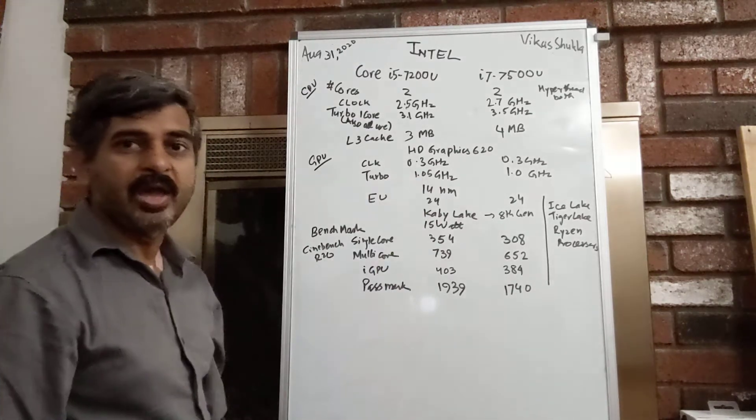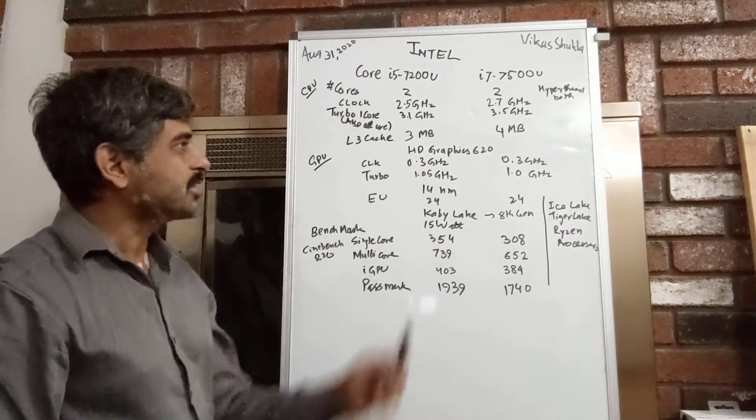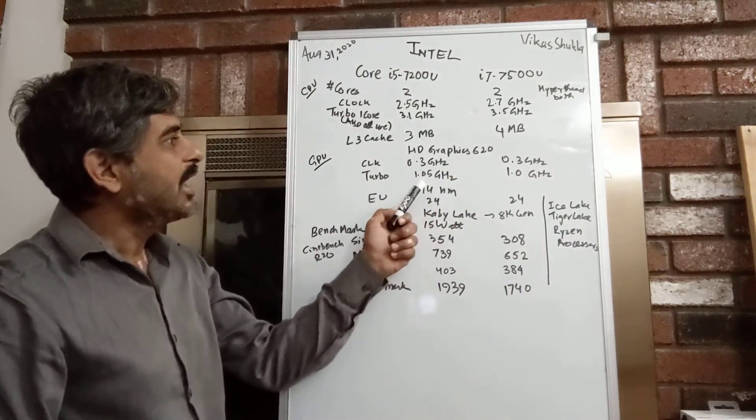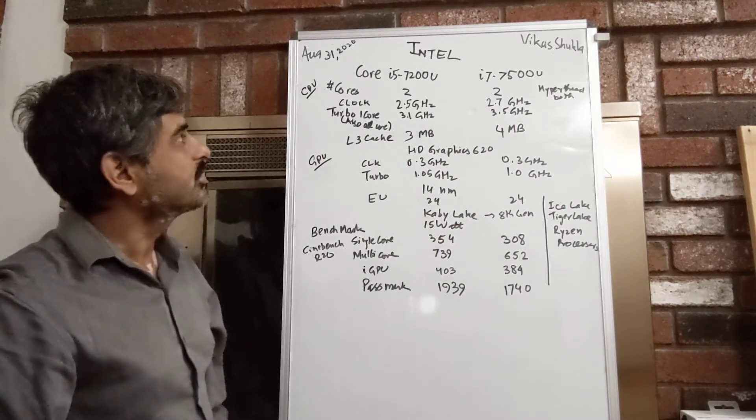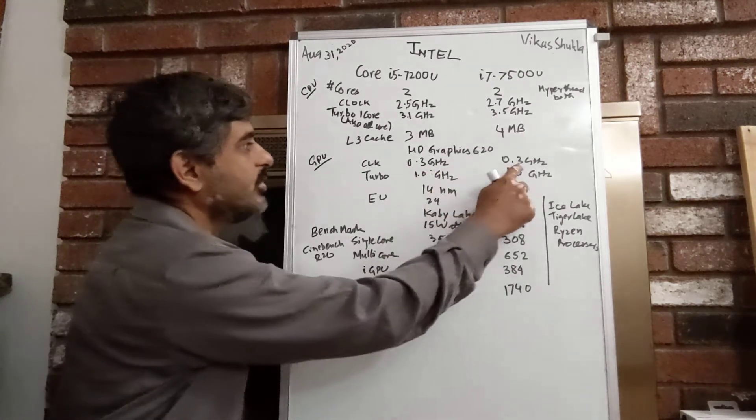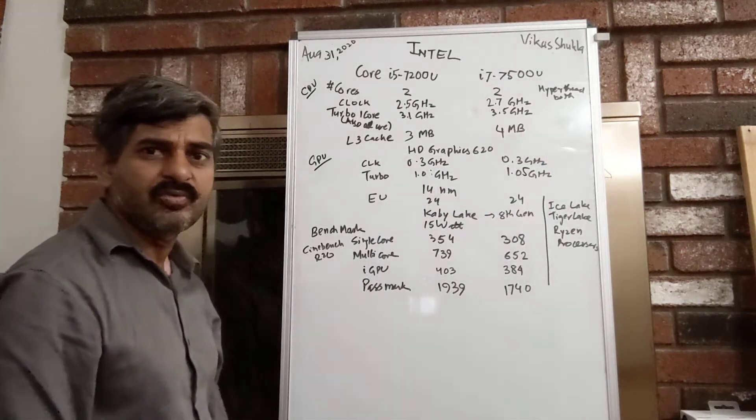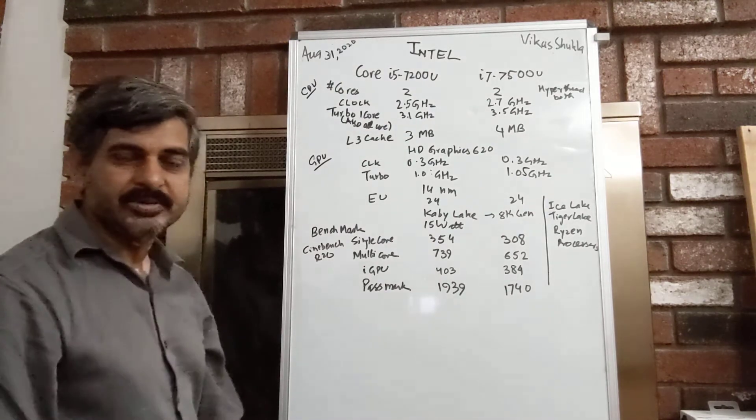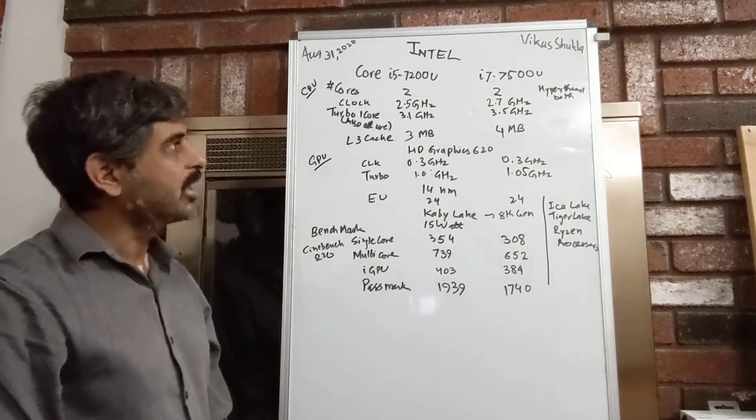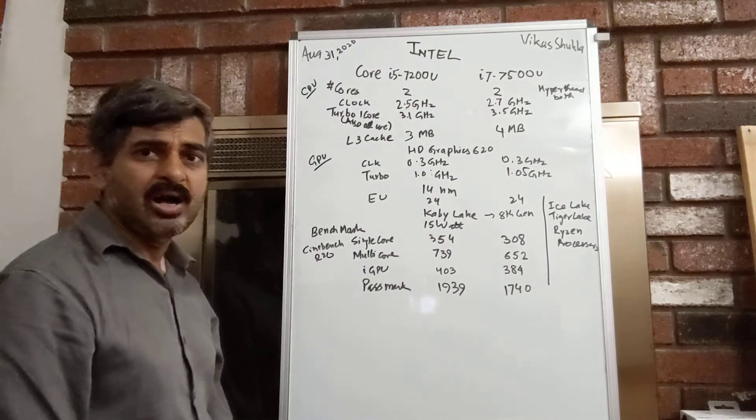Both of them have the same integrated graphics, HD Graphics 620, and we see a nominal increase in the turbo clock frequency from 1.05 gigahertz to 1.1 gigahertz, giving about 5% extra processing power. About the same.